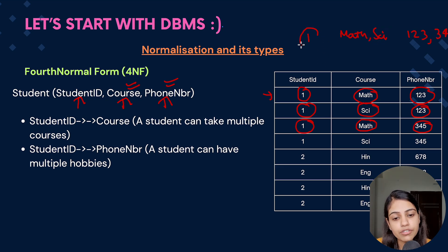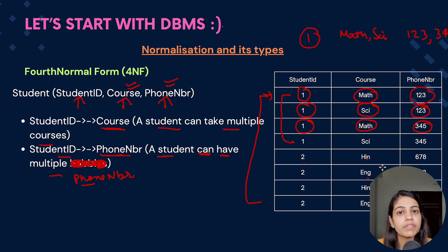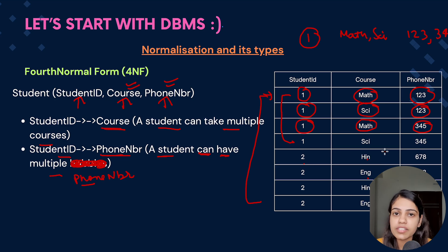So you can see for a given StudentID, we are providing four entries. Now again coming to Student 2, Student 2 has taken Hindi and English and the phone numbers are 678 and 910. So here you can see that there is so much redundant data. So let's see how we can decompose the table and get rid of this redundant data.